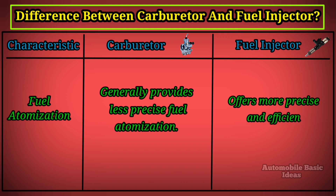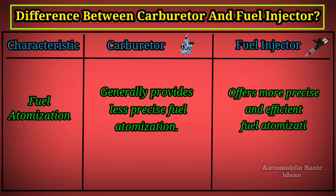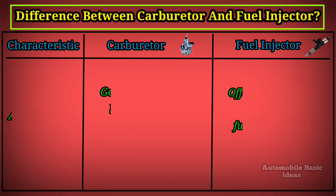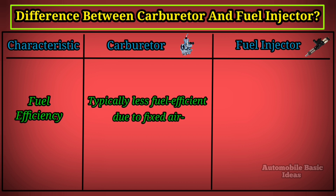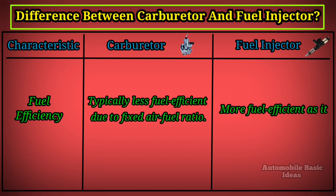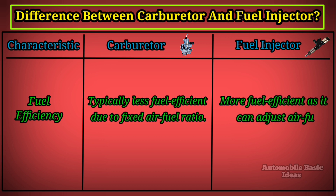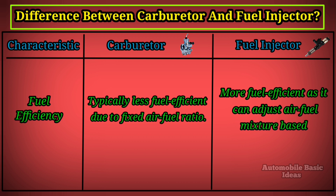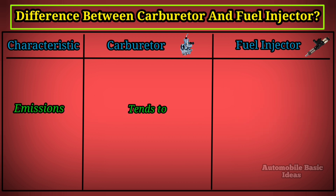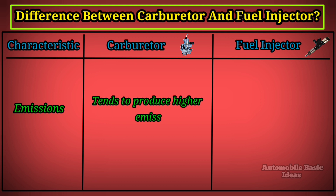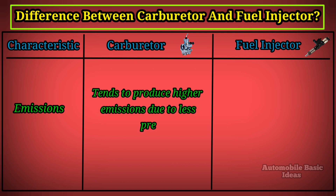Fuel efficiency: carburetors are typically less fuel efficient due to a fixed air-fuel ratio. Fuel injectors are more fuel efficient as they can adjust the air-fuel mixture based on engine conditions. Emissions: carburetors tend to produce higher emissions due to less precise control.